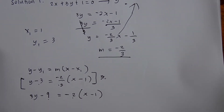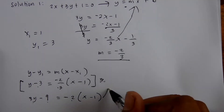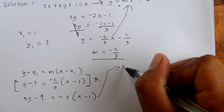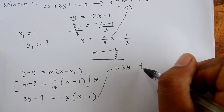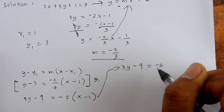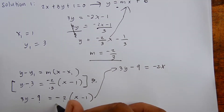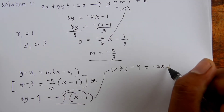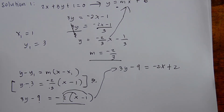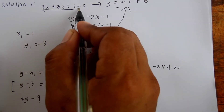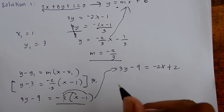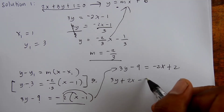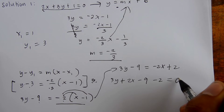We write our answer. Copy 3y minus 9. Then 3y minus 9 equals, distributing negative 2, that is negative 2x plus 2. Then we transpose negative 2x plus 2 to the left side, so it becomes 3y plus 2x minus 9 minus 2 equals 0.